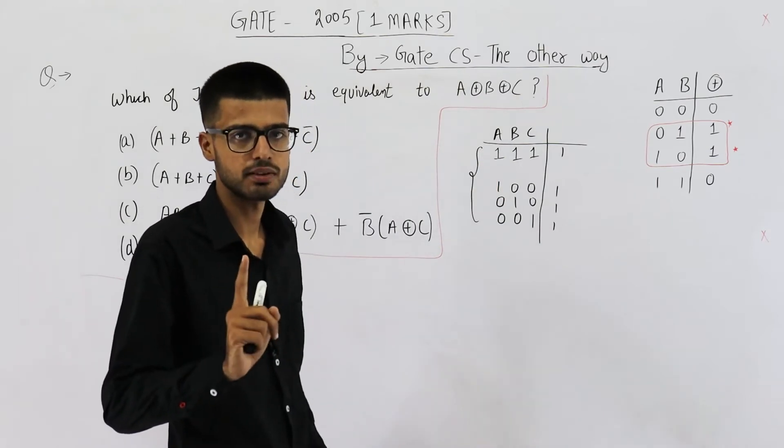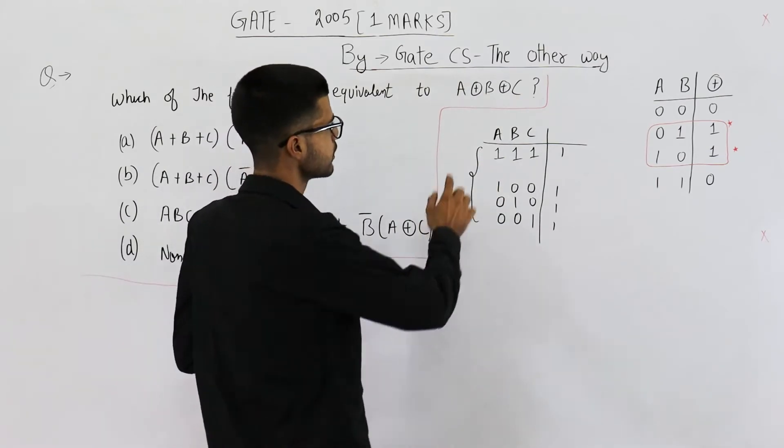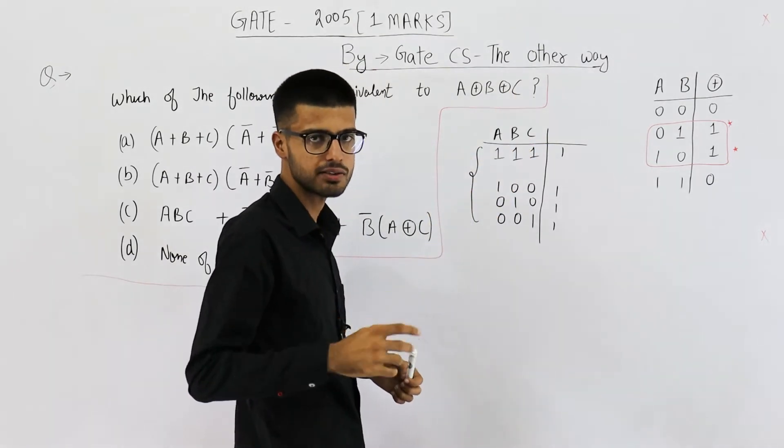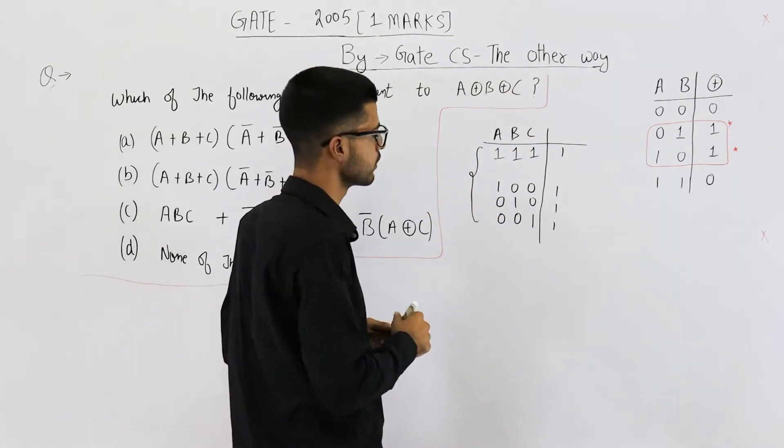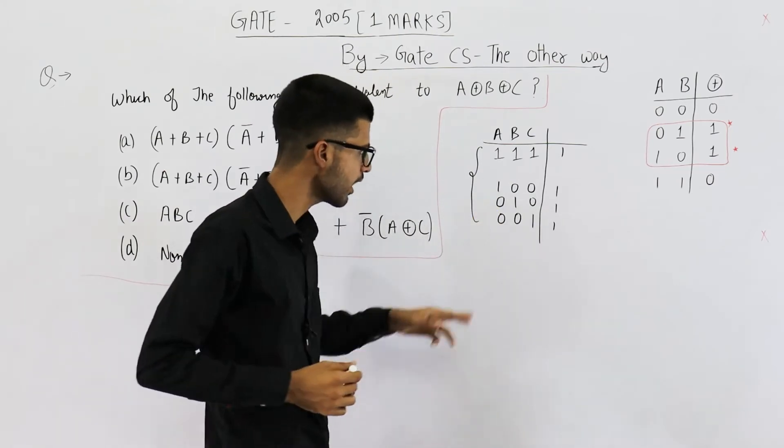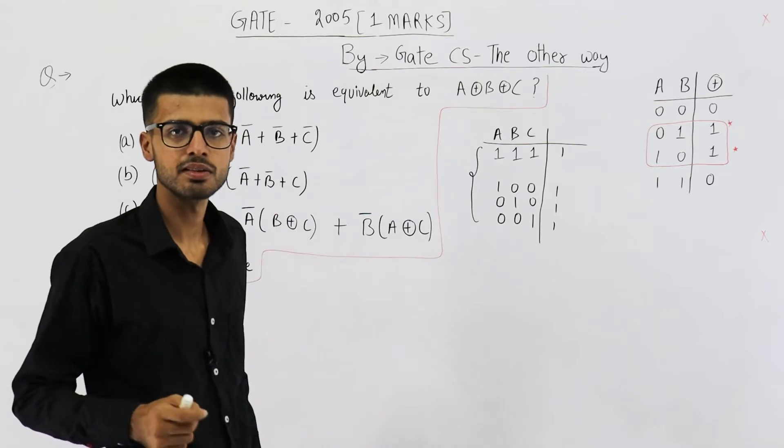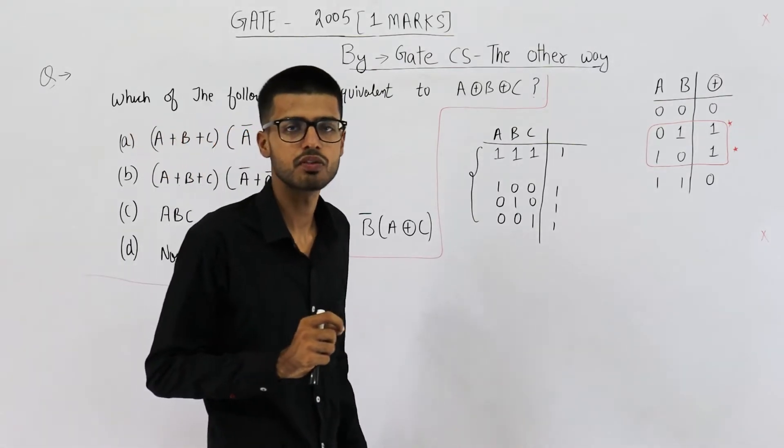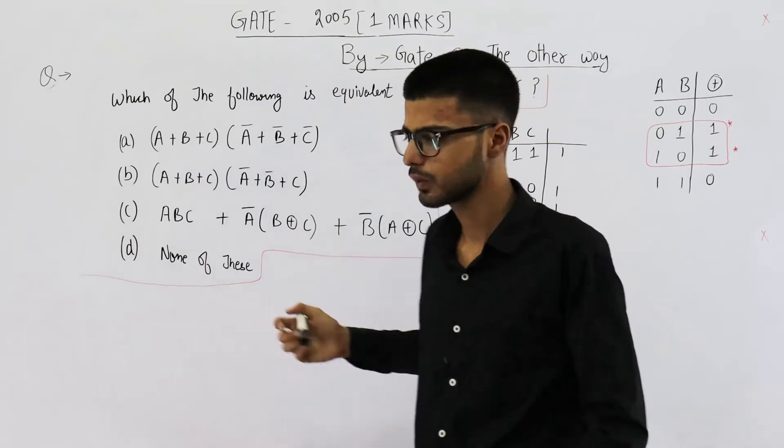We have output is equal to high whenever odd number of inputs are high. Other possible cases, only one input is high. 1 is odd number. That means any one of these three, if it's high and the rest two are 0, output is going to be 1. So these three cases. Except for these four cases, there does not exist any other input for which the output is going to be high.